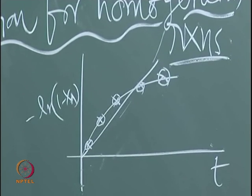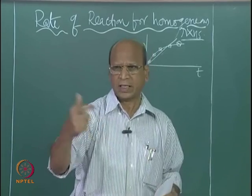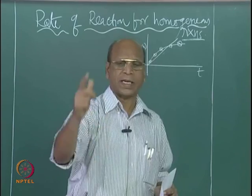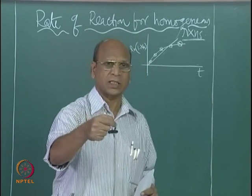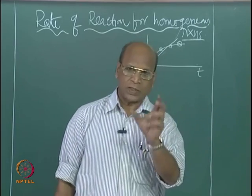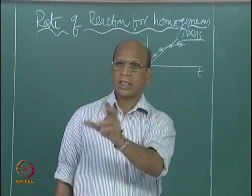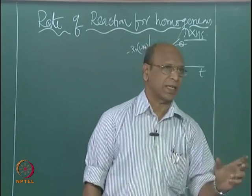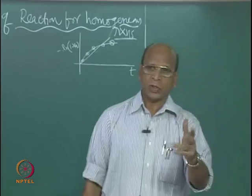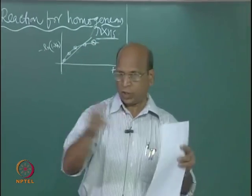Take the data as accurately as possible. We have discussed how to take data — there are many methods, we have to use either conductivity method or simple titration method for analyzing the concentration. Always in this rate equation finding, you have to first conduct the experiment and then you should have data: concentration versus time, concentration of the key reactant versus time. Then you can convert that data into first-order or second-order reaction equivalent data.